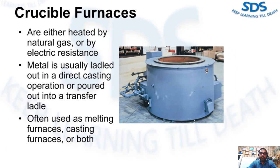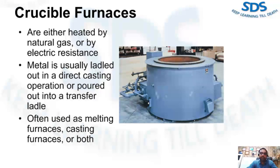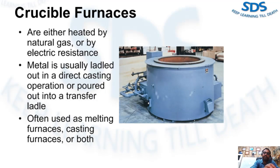The second major type of furnace utilized in the die casting industry is the crucible furnace. As seen in the images, these furnaces are either heated by natural gas or by electric resistance. Metal is usually ladled out of these furnaces in a direct casting operation or poured into a transfer ladle. Most small die casters utilize crucible furnaces either as melting furnaces, casting furnaces, or both. Great care must be taken when used as a combination furnace — where melting and casting occur in the same crucible furnace.